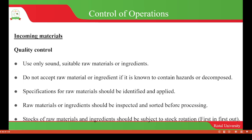This is very important because if we use a raw material which contains hazards, the food product we produce will be unsafe and unsuitable for human consumption. We have to ensure that we do not accept raw materials or ingredients that are known to contain hazards or are decomposed. We can ensure this by inspecting and sorting raw materials properly before accepting or using them. Specifications for raw materials should be identified and applied.